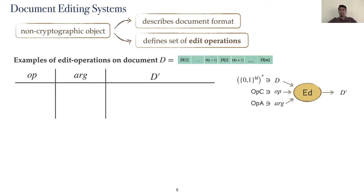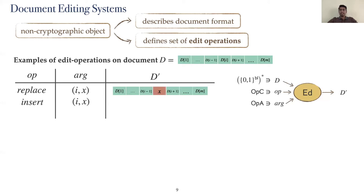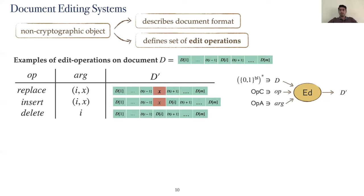We now look at some examples of edit operations. We start with the replace operation, which replaces a block specified by its index number i with a block x. Another example is the insert operation, which inserts a block x at the ith position of the document. The final example we consider is the delete operation, which deletes the ith block of the document.